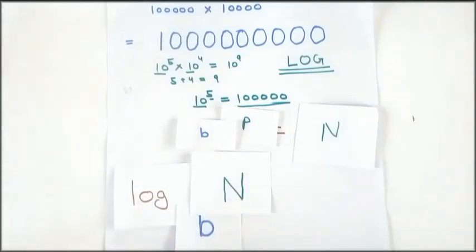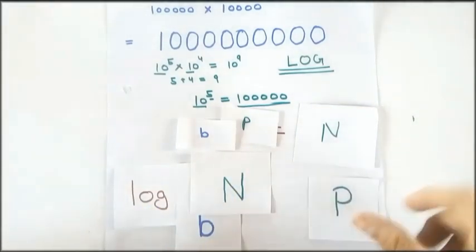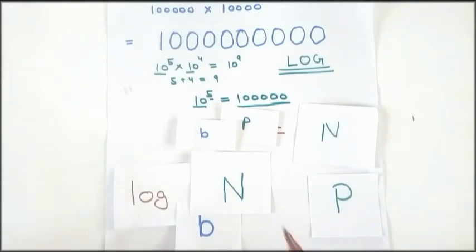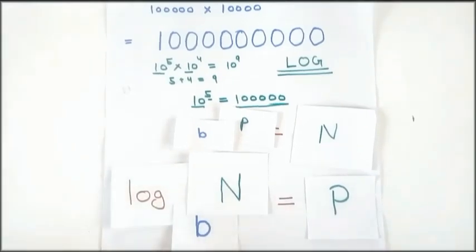And then the power which is P goes there. And here is an equal to. So, log to the base 10 of N is equal to P. That means how much power the base will have to get the number N.